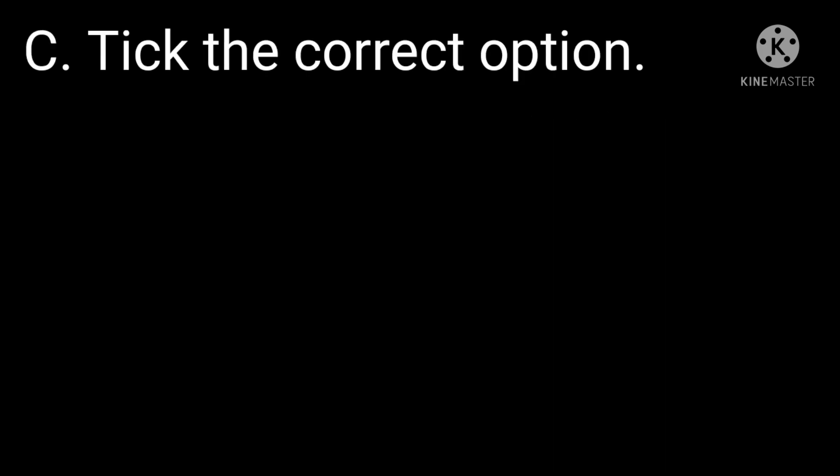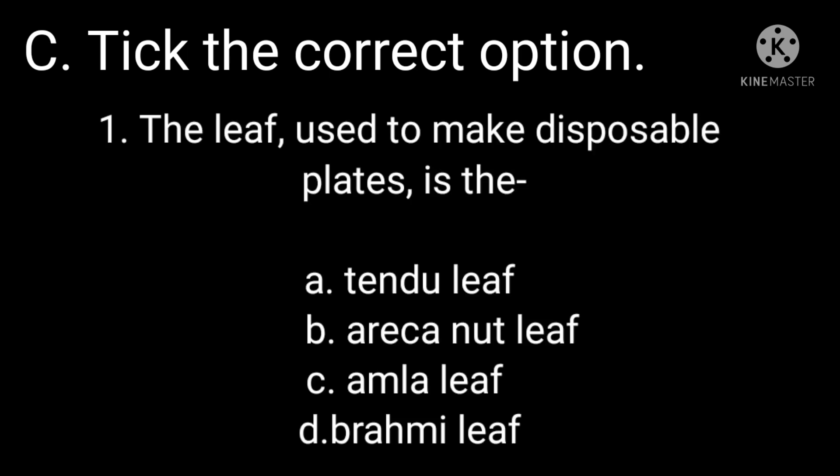Part C is pick the correct option. First statement is the leaf used to make disposable plates is, the options are dindu leaf, areca nut leaves, amla leaf, brahmi leaf. Option B, areca nut leaves is the correct one.